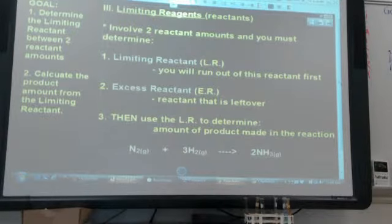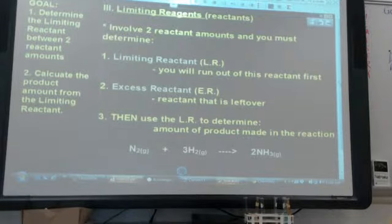And then we are going to use that limiting reactant to determine the amount of product. In terms of our recipe analogy, it might be something like this. If you have a recipe and you want to make chocolate chip cookies, you have four eggs in front of you and six cups of flour.